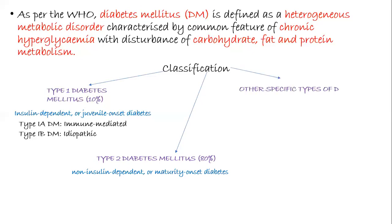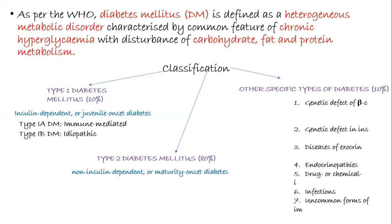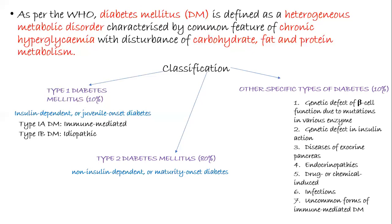The next class is other specific types of diabetes, constituting about 10% of cases. Reasons include genetic defects of beta cell function due to mutation in various enzymes, genetic defects in insulin action, diseases of the exocrine pancreas, endocrinopathies, drug- or chemical-induced diabetes, infection-induced diabetes, or other uncommon forms of immune-mediated diabetes mellitus.